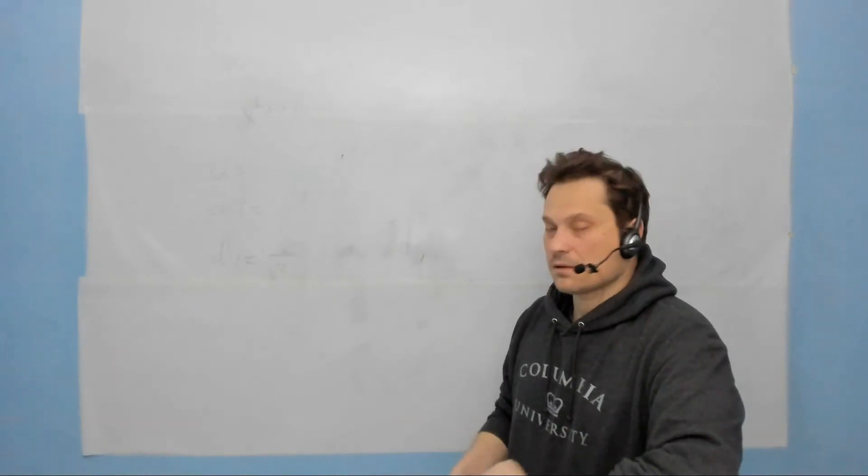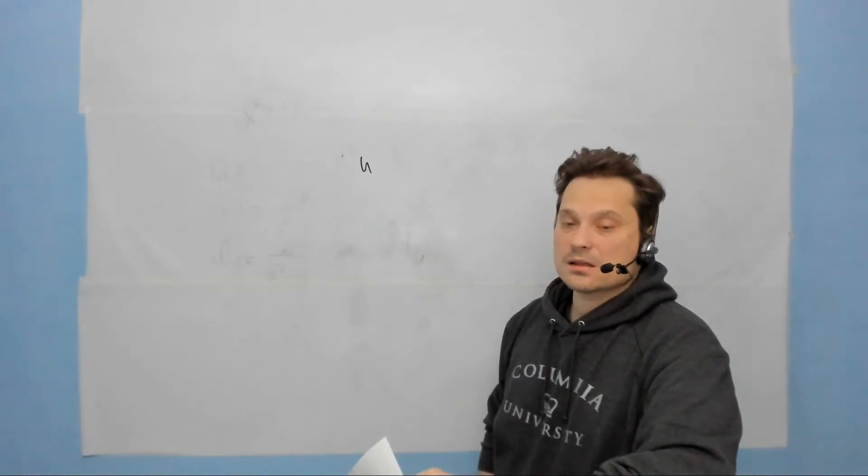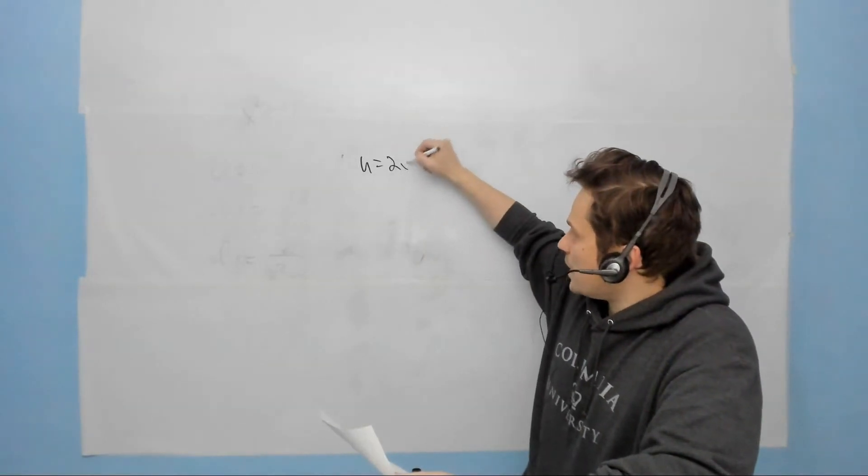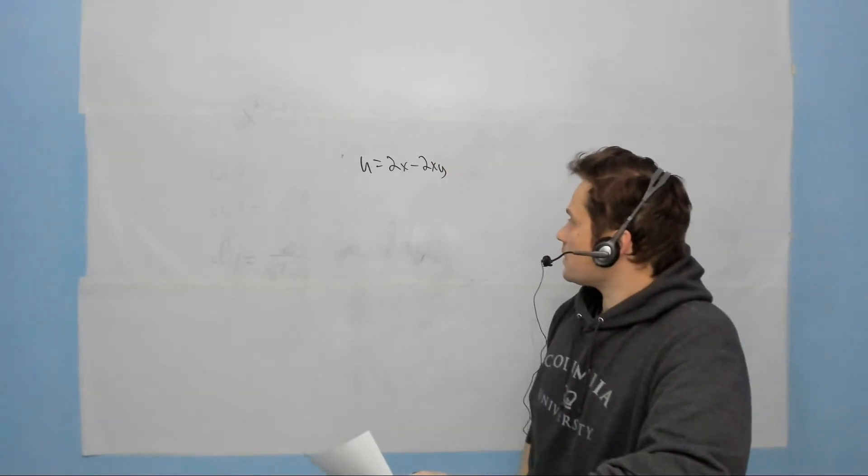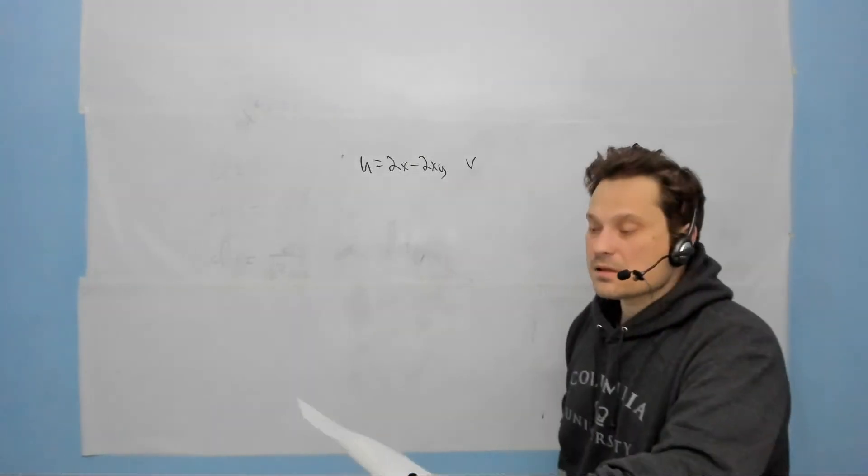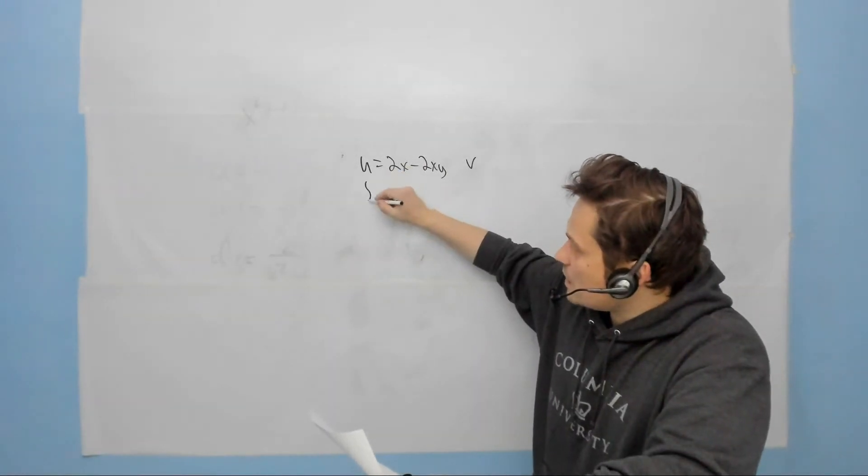Welcome. In this video, I'm going to show you how to find the harmonic conjugate of the following function. This is in the context of complex analysis. So I have u equals 2x negative 2xy, and what I want to do is find the function v that is the harmonic conjugate of that. So I'm going to use the Cauchy-Riemann equations for that purpose. Let me just write them down.